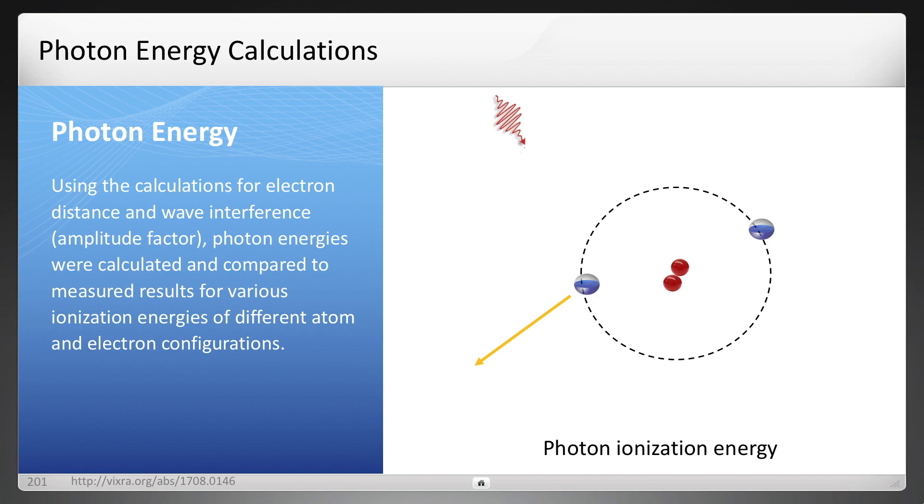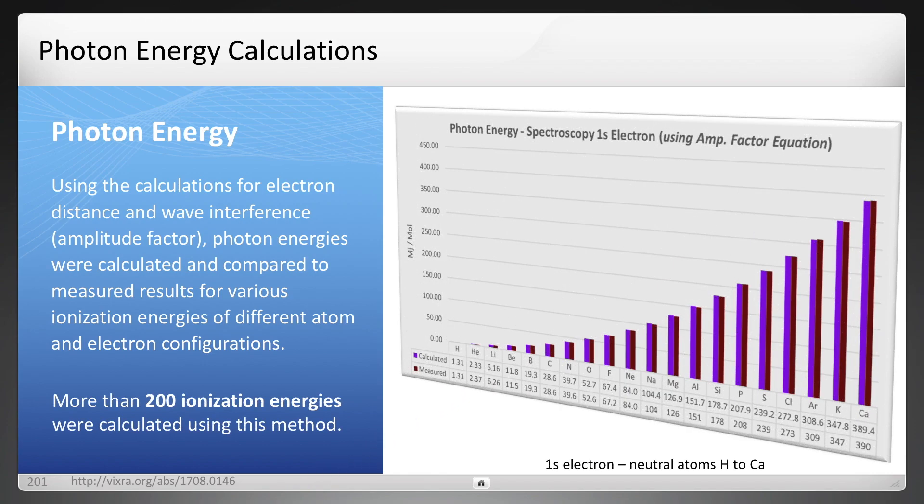Now, it's helpful for photon calculations, as I mentioned, for ionization energy. And this is just an illustration of a photon colliding with electron, and it leaves the atom, which is ionization. And more than 200 ionization energies were calculated using the method described here. The information is in that paper in the URL below.